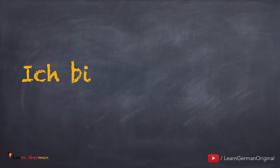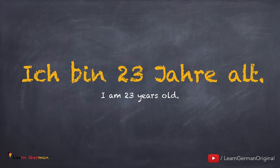Let's look at the next one: Ich bin dreiundzwanzig Jahre alt. Noch einmal. Ich bin dreiundzwanzig Jahre alt. Here you can also simply say Ich bin dreiundzwanzig. Noch einmal. Ich bin dreiundzwanzig. To find out how you can say your age in German, check out our video on numbers. We did that in Lesson 3.